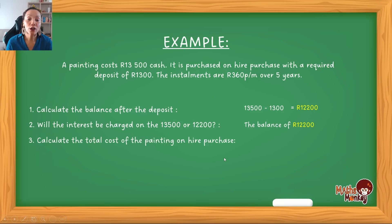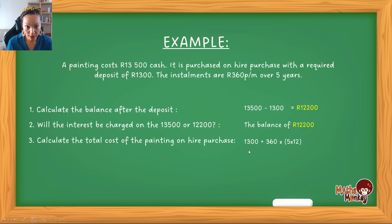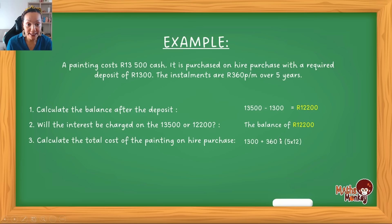Next: calculate the total cost of the painting on hire purchase. The total cost is all the money that leaves your pocket to pay for it. That's your R1,300 deposit plus R350 per month multiplied by 60 months — because it's five years and you're paying every single month. Five multiplied by 12 equals 60 payments of R350, so your total cost for this specific painting is R22,300.